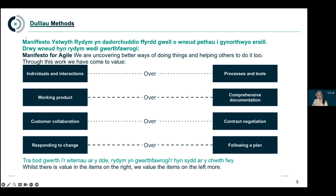The Agile manifesto sets out what we value in an Agile environment. We value the things on the left over the things on the right. When we say we value the items on the left more than the right, it doesn't mean we don't do the things on the right. In an Agile environment we do, of course, have to adhere to governance and follow a plan. But this manifesto is really trying to get us thinking about different ways of working to deliver the highest value products and services to our users.